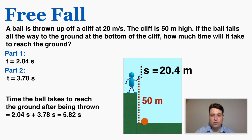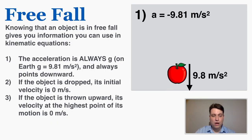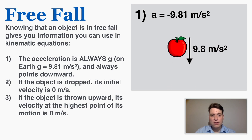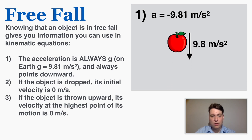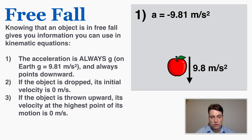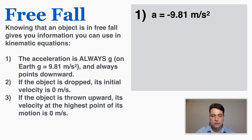That probably seemed pretty complex, but once you do a few problems it will become much clearer. Just remember the three rules: the acceleration is always 9.81 meters per second squared downward; if the object is dropped, its initial velocity is 0 meters per second; and if the object is thrown upwards, its velocity at the highest point of its motion is 0.